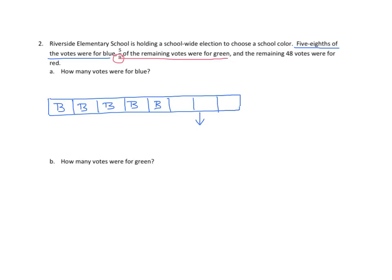And now we have three parts, or three-eighths remaining. We're going to make a second part to this tape diagram. We have five-ninths of the remaining votes for green. So, we have the denominator nine. We'll break these down to ninths. And we know that five of those nine were green. And we know that the remaining 48 votes, and notice that that is four units, four-ninths are red. So we know that four units equals 48.